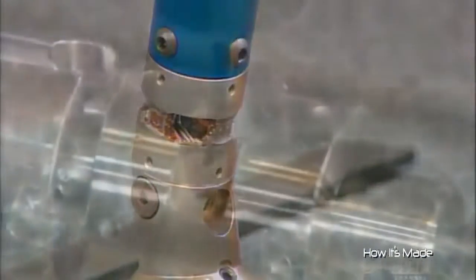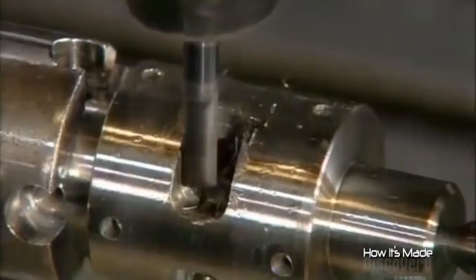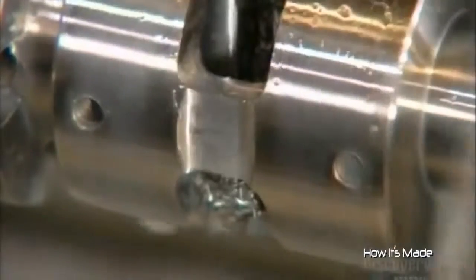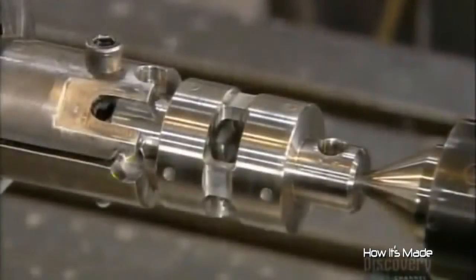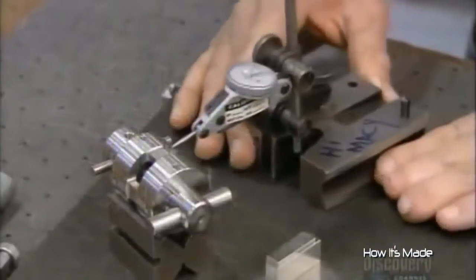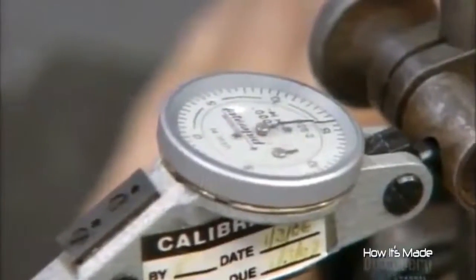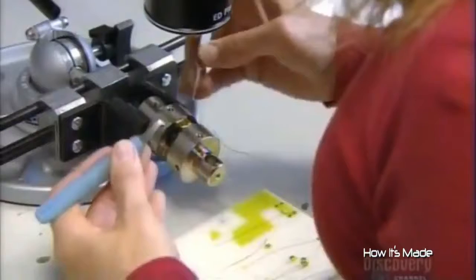To make the load cells, a milling machine shapes steel bars using a solid carbide end mill. Lubricant cools the intense heat and washes away the metal particles. Using a precision tool called a dial indicator, they verify the load cell's dimensions to within 5 one-hundredths of a millimeter.